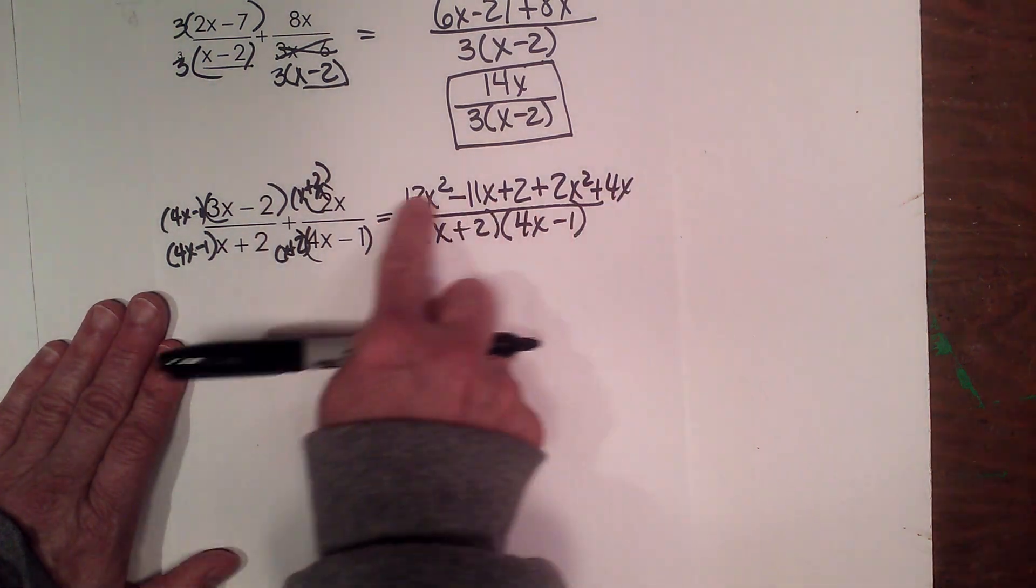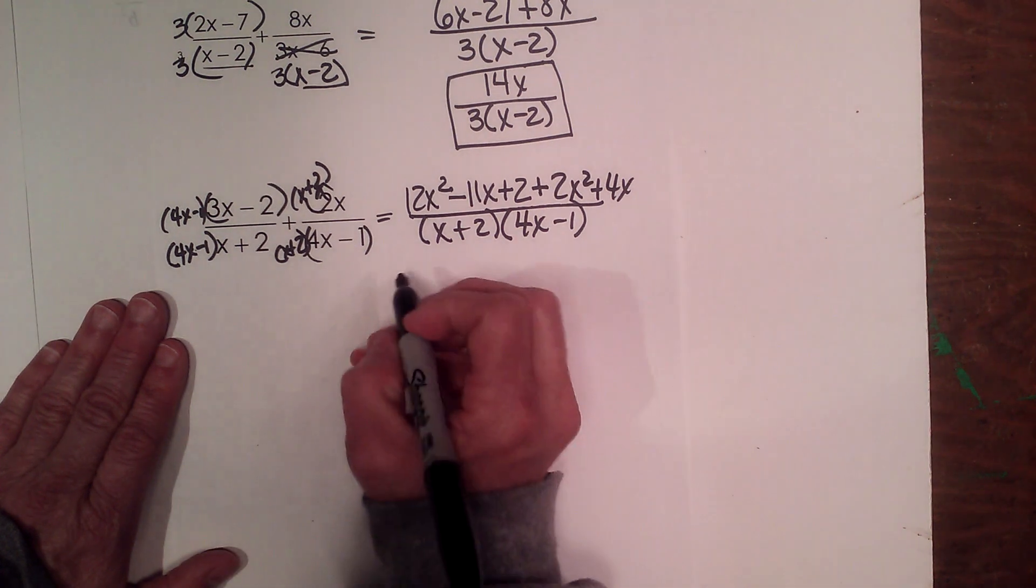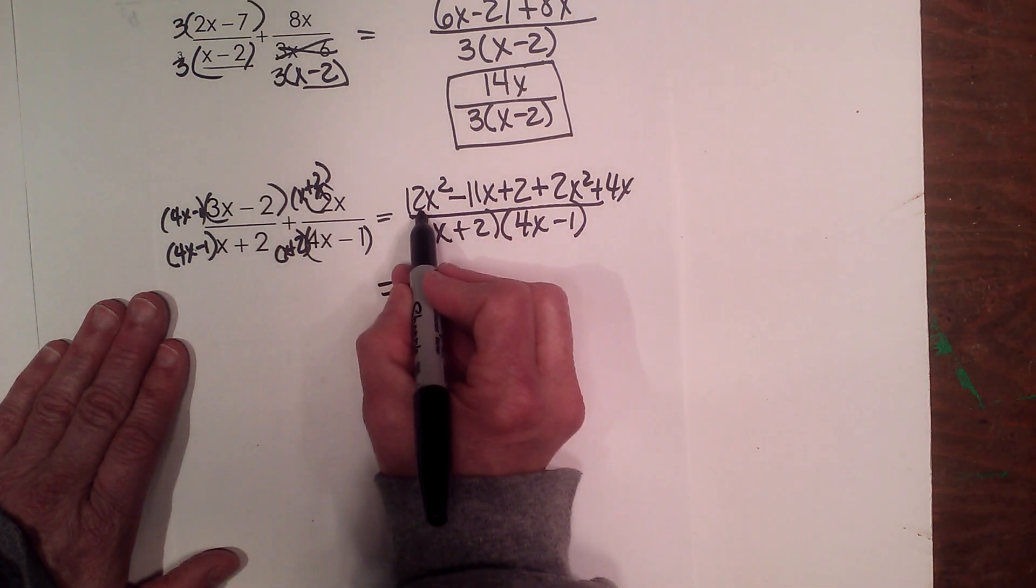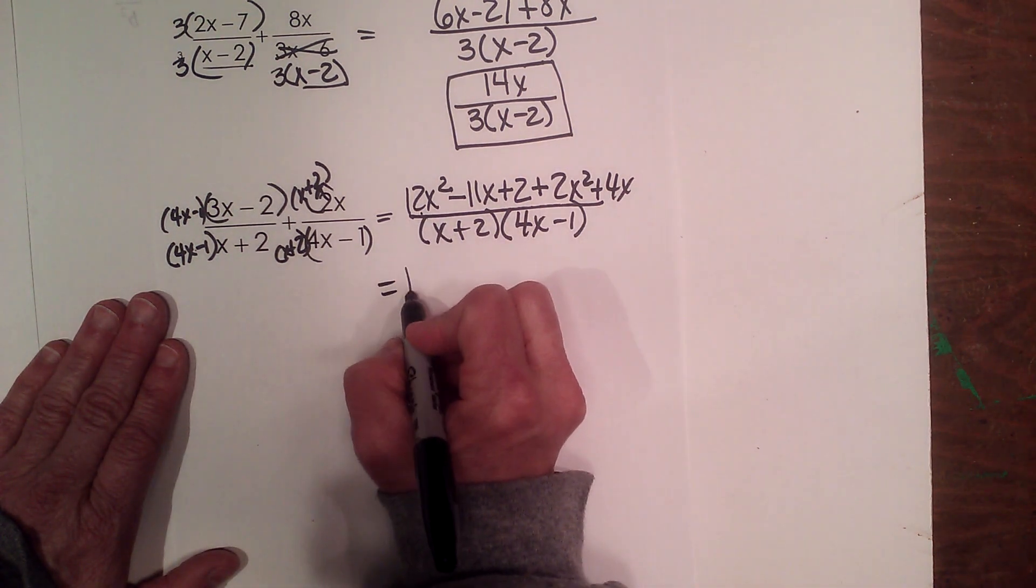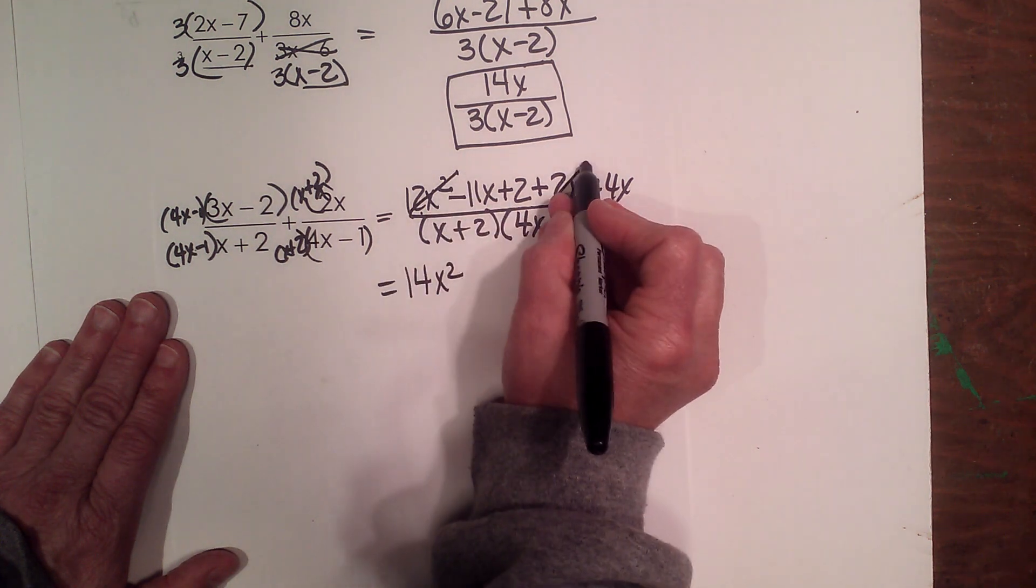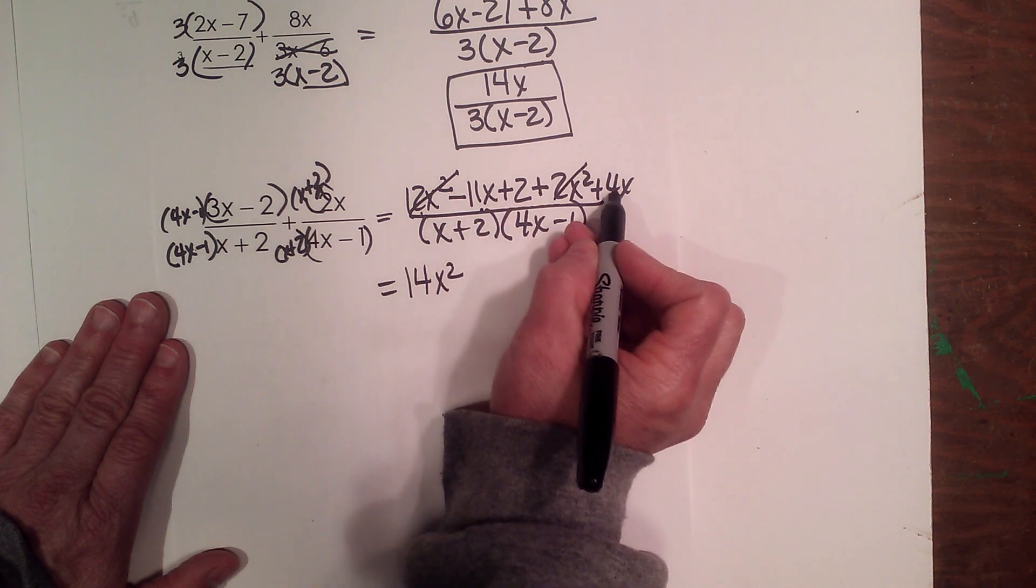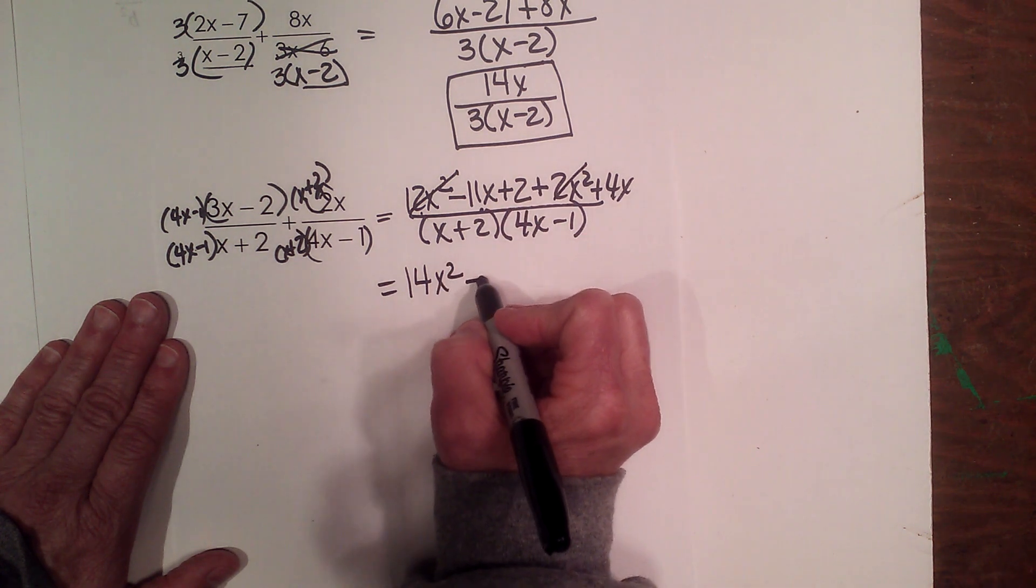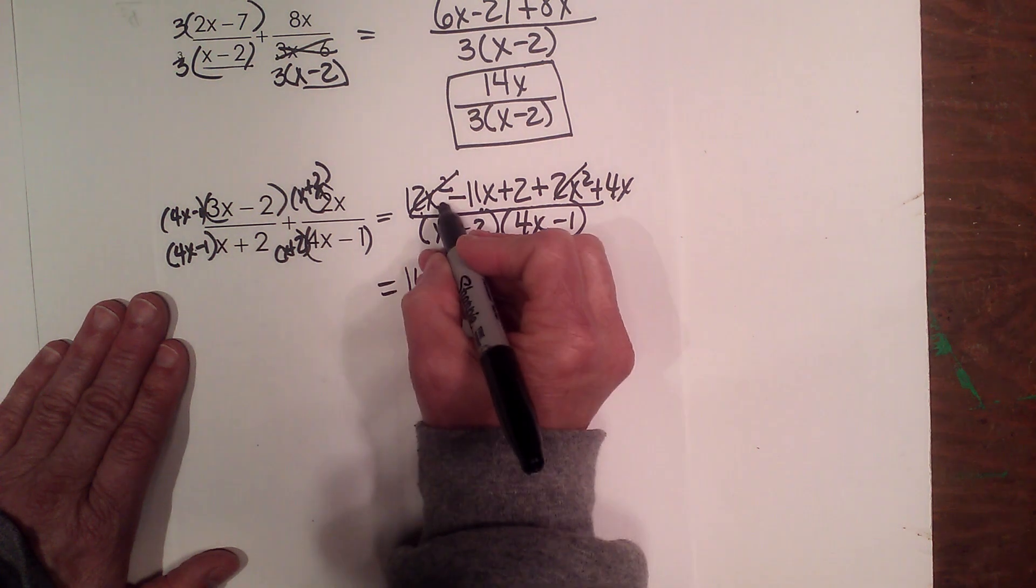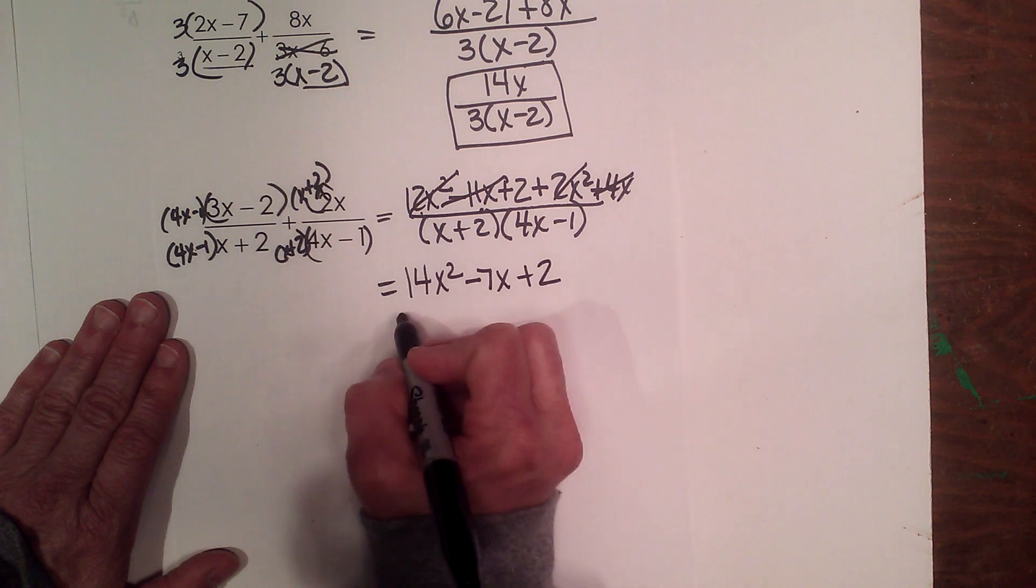Now here's my expression. I just now need to simplify it. So let's add our like terms. 12x squared plus 2x squared is 14x squared. Cross those out so I don't use them again. Then I have a negative 11x and a positive 4x. That's negative 7x. Cross those out and I just bring down my constant of positive 2.